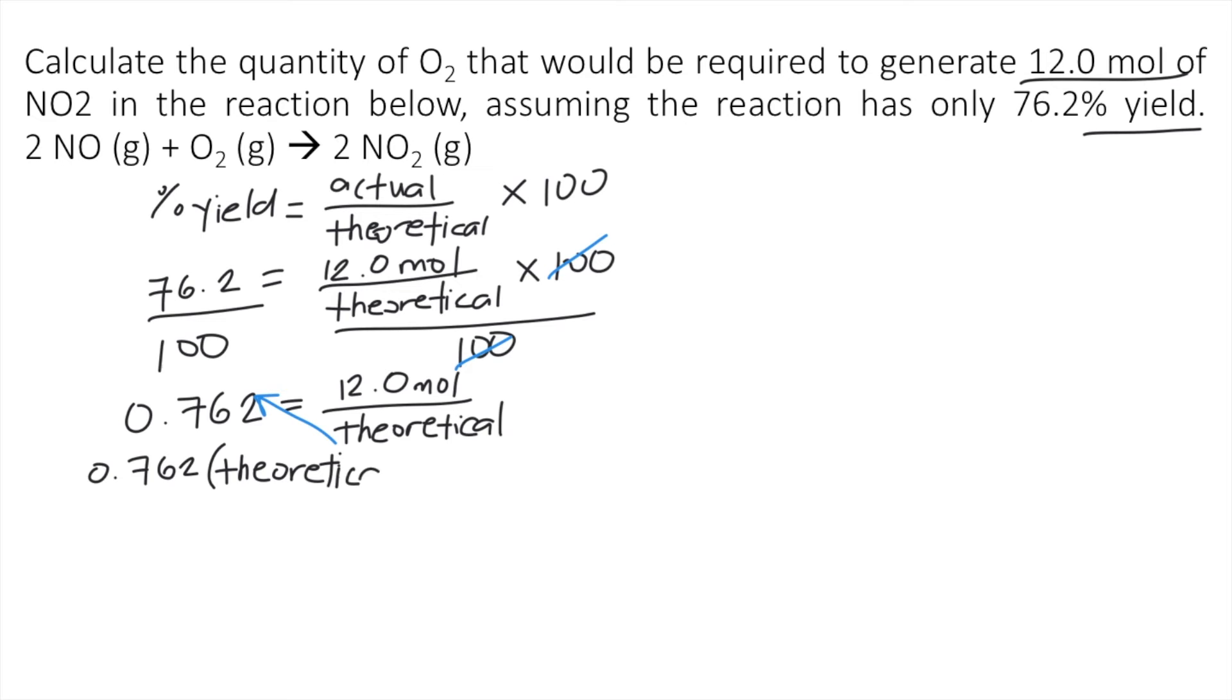And on the right side, we have 12.0 moles. So to solve for theoretical yield, we divide both sides by 0.762.